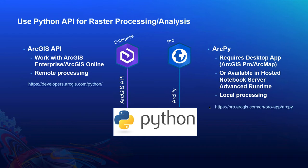The ArcGIS API for Python also contains modules to perform administrative work on enterprise data contents. On the other hand, there is also the ArcGIS API contained in the ArcPy modules. ArcPy is offered through ArcGIS desktop apps such as ArcGIS Pro and ArcMap, and is also available through ArcGIS Server setup and the hosted notebook server advanced runtime. ArcPy is used to perform local processing and analysis on raster data. Here are some links you can check out to learn more about these APIs.